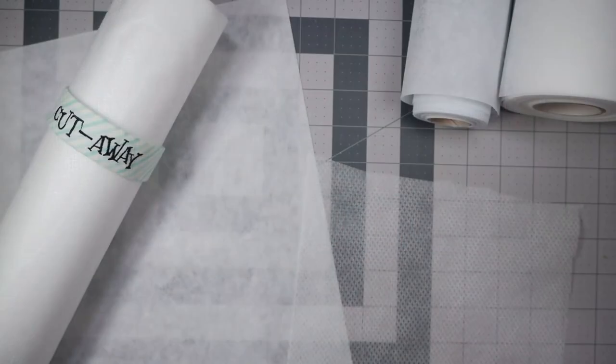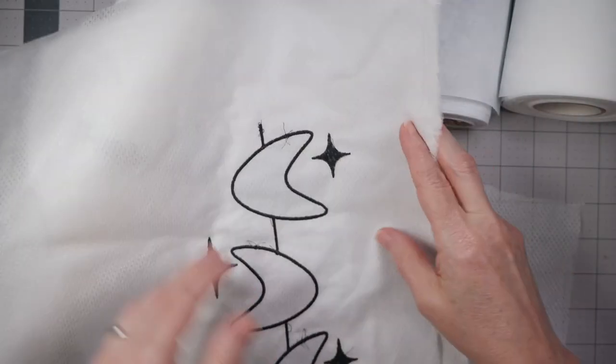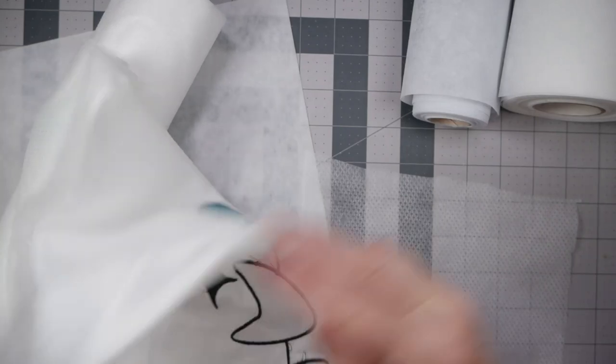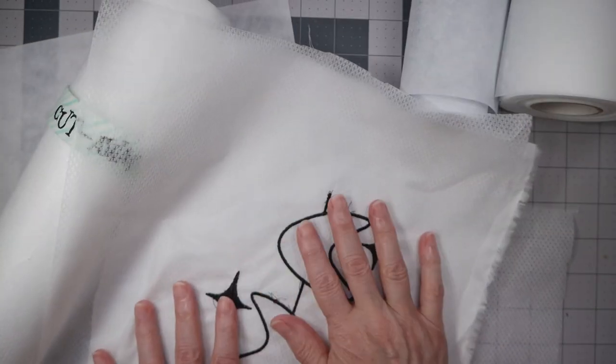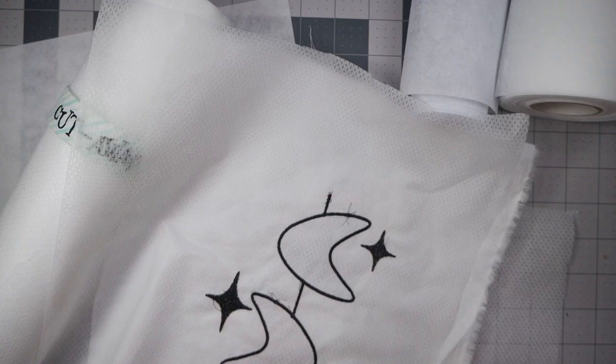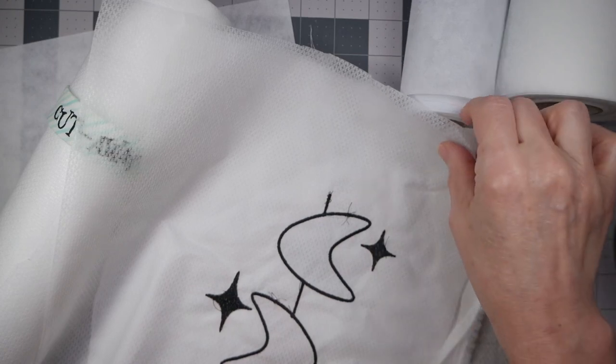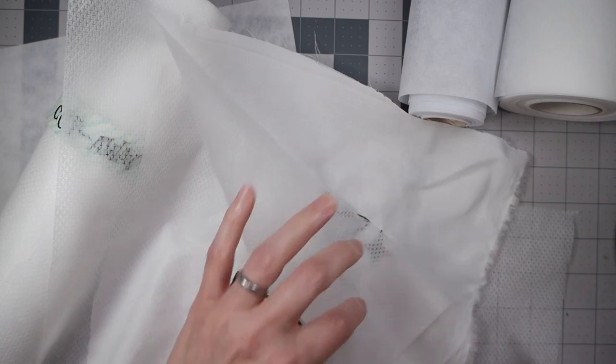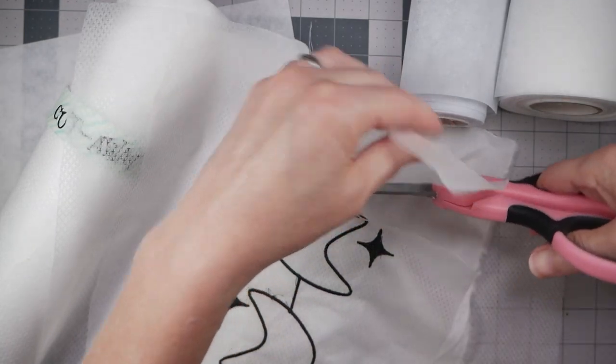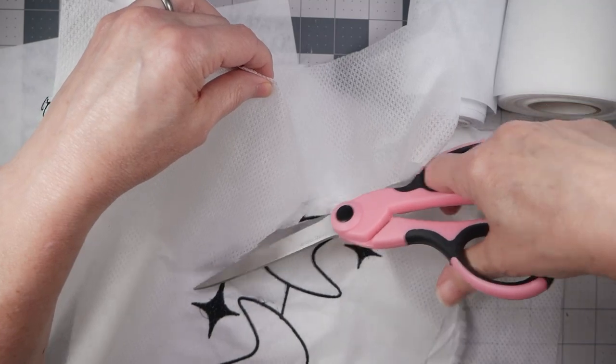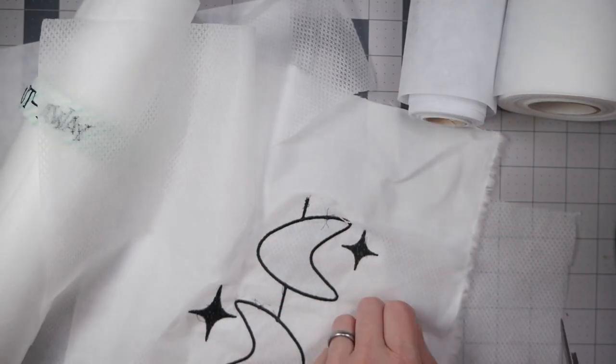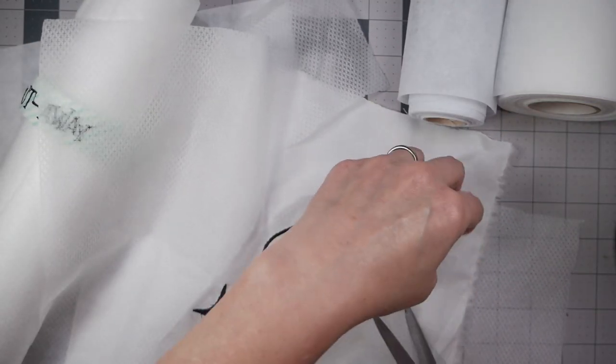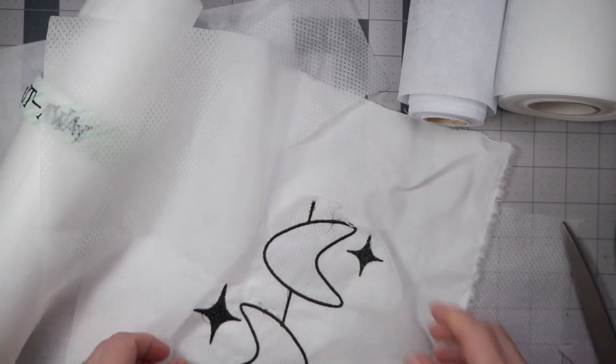Let's start with cutaway. Cutaway stabilizer is just what it sounds like. After you've embroidered a design, this is the front, this is the back, and you have to cut the stabilizer away from the back of your fabric. You can't just tear it like tear away. This stuff will pull your stitches out. So you actually have to cut around, and you want to cut as close as you can to your design when you're finished stitching. This is actually the mesh. That's why it's so thin.